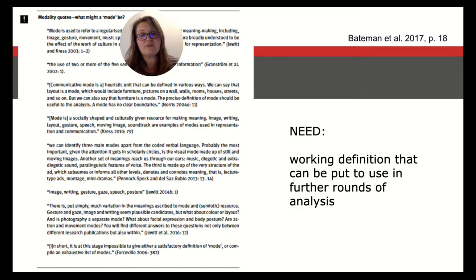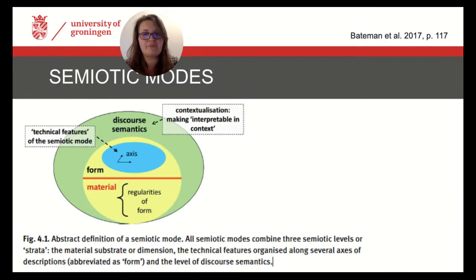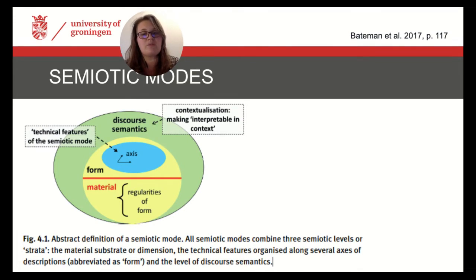Admittedly, definitions are always theoretically dense and often seem too abstract — and this will perhaps also first be the case for the definition we will discuss. But we will definitely see later how this definition can be used for practical analysis. Every semiotic mode combines three semiotic levels: the material dimension, the technical features organized along several axes of description — described here as form — and the level of discourse semantics.